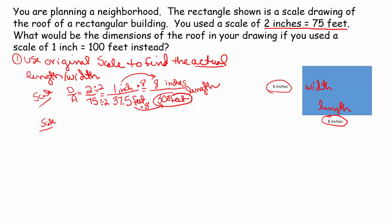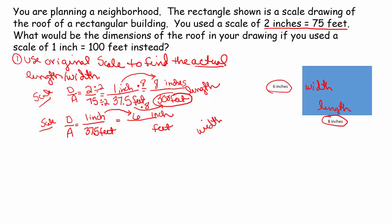Now I'm going to use the scale I was given to find the actual width. Drawing over actual — I broke it down to 1 inch is 37.5 feet. The width given on my drawing is 6 inches, and I'm wondering what that would be in feet on my actual roof. How do I get from 1 to 6? I multiply the numerator by 6, so I also multiply the denominator by 6. 37.5 times 6 is 225 feet. So the actual width of the roof is 225 feet. If you had another method to get there, absolutely use the method you're most comfortable with.